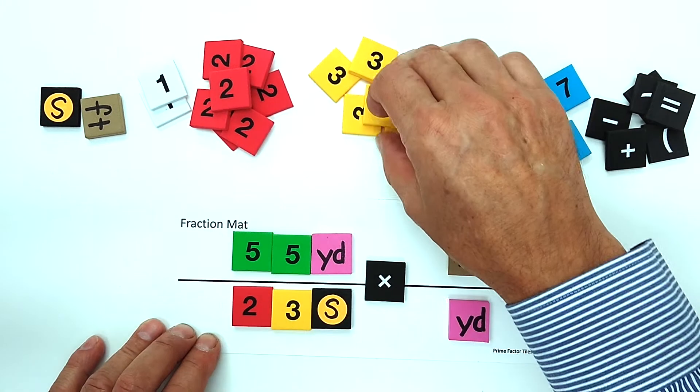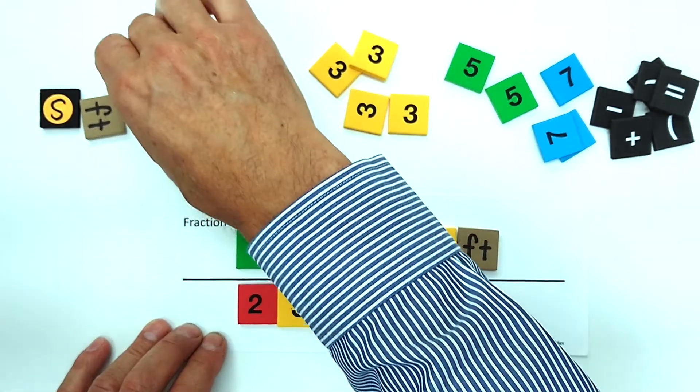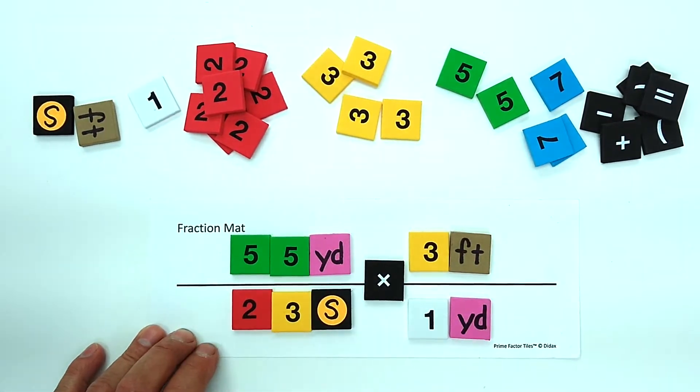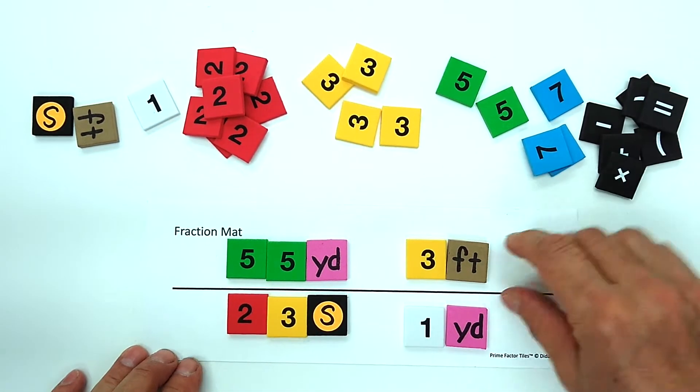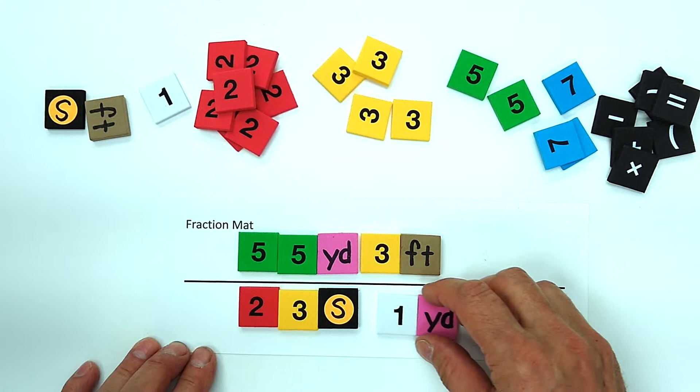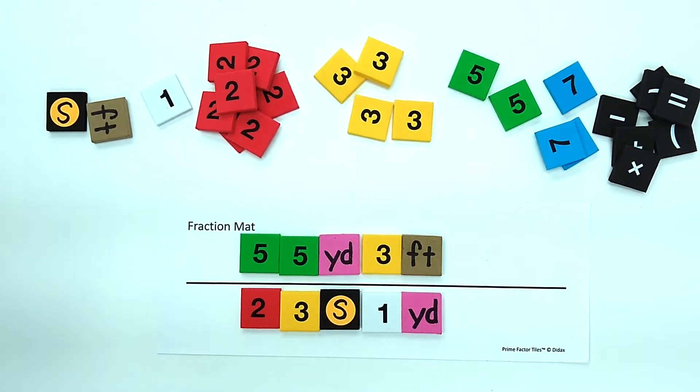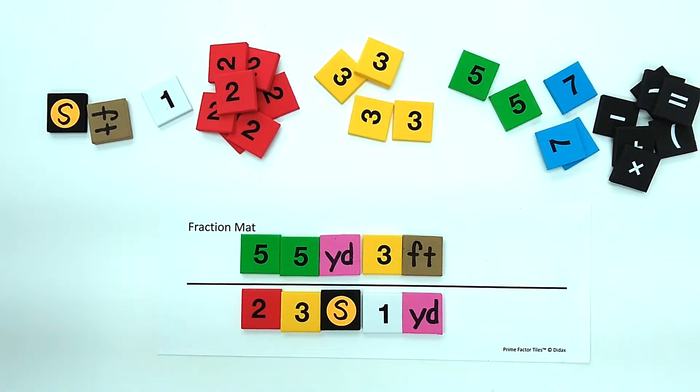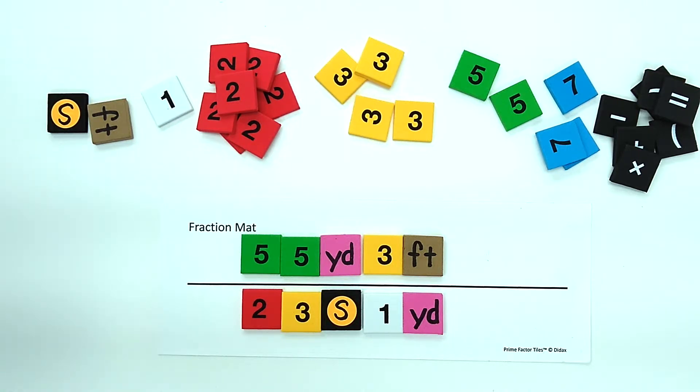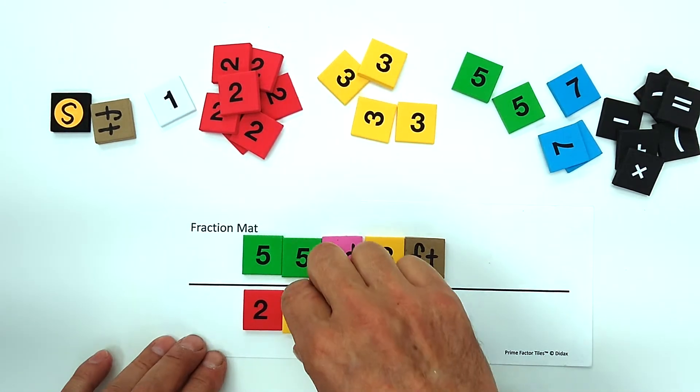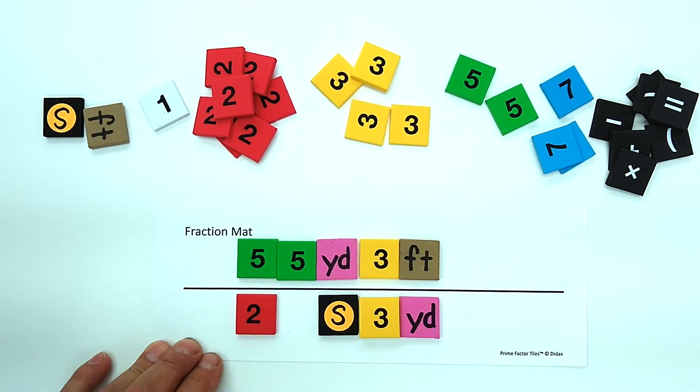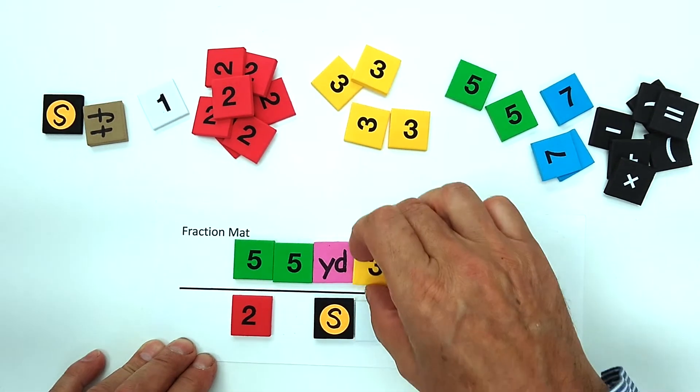When we multiply with fractions or rates, we simply push the numerators together and push the denominators together. The only difference from what we've done with fractions in the past is that now we have unit factors in addition to numerical factors. Best part is, unit factors behave the same way as numerical factors. So a 3 common to numerator and denominator is 3 divided by 3—3 divided by 3 is 1, canceling out.